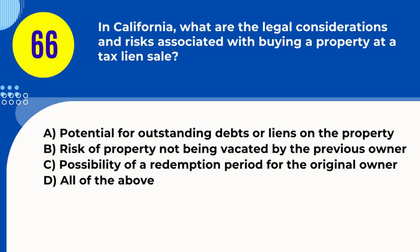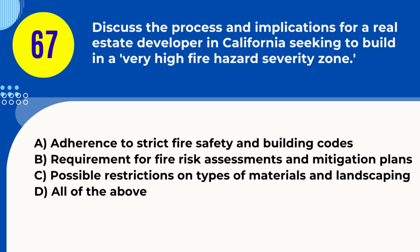Question 66. In California, what are the legal considerations and risks associated with buying a property at a tax lien sale? A. Potential for outstanding debts or liens on the property B. Risk of property not being vacated by the previous owner C. Possibility of a redemption period for the original owner D. All of the above. Answer: D. All of the above. Explanation: Buying at a tax lien sale can involve risks like existing debts, redemption periods, and issues with property vacancy.